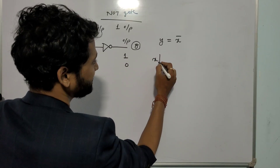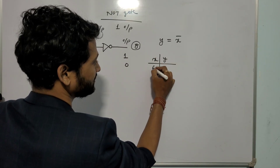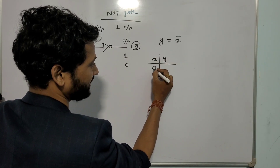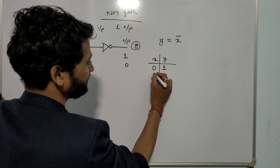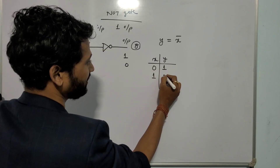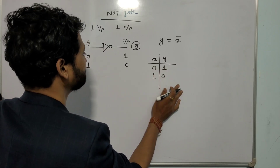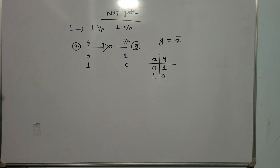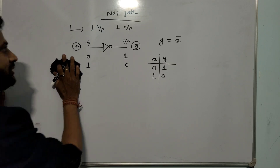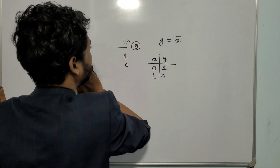In the truth table for the NOT gate, x is the input and y is the output. If x is 0, y will be 1; if x is 1, y will be 0. That is all about the NOT gate.